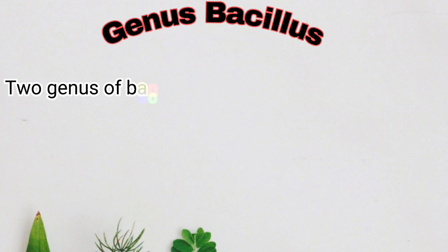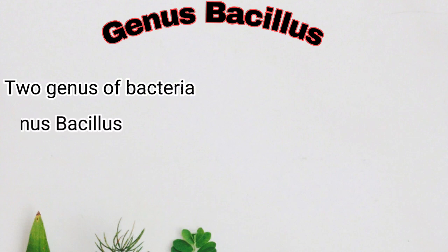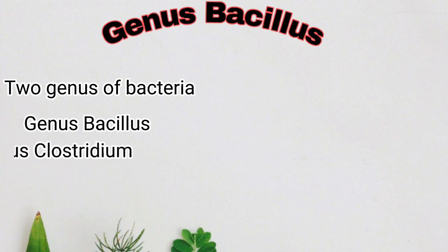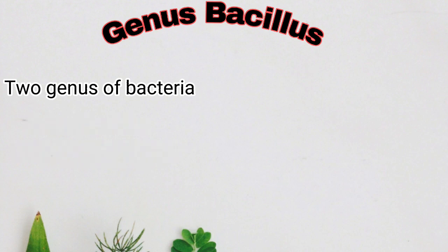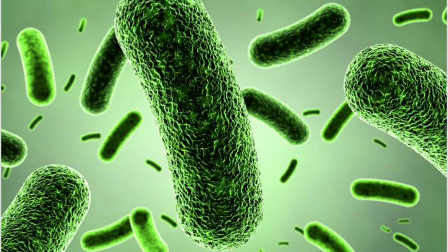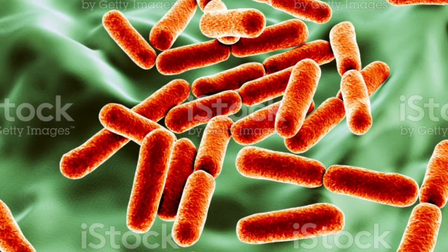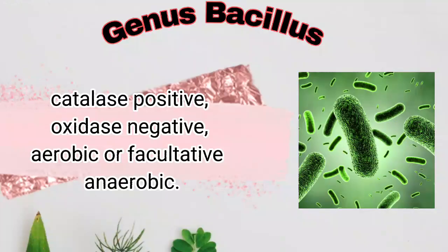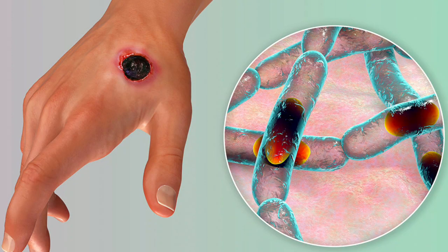Spore-forming rods: there are two genera of bacteria which form endospores — genus Bacillus and genus Clostridium. Bacillus species are large, gram-positive, endospore-forming motile rods, except Bacillus anthracis and Bacillus mycoides. They are catalase positive, oxidase negative, aerobic or facultative anaerobic, and widely distributed in the environment because they produce highly resistant endospores.